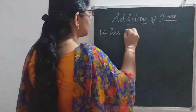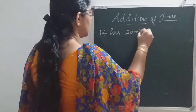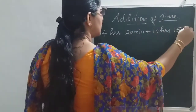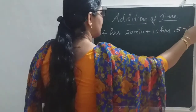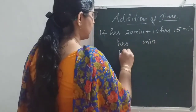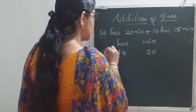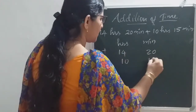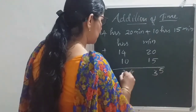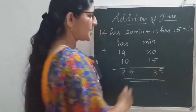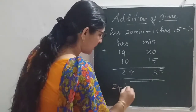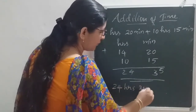That type of example: 14 hours 20 minutes plus 10 hours 15 minutes. Write hours and minutes: 14 hours 20 minutes plus 10 hours 15 minutes. 5 plus 0 is 5, 2 plus 1 is 3, 4 plus 0 is 4, 1 plus 1 is 2. Here it is less than 60, so no need to do anything. The answer is 24 hours 35 minutes.